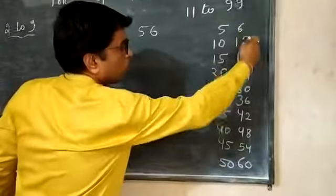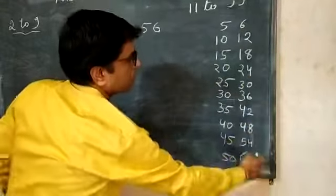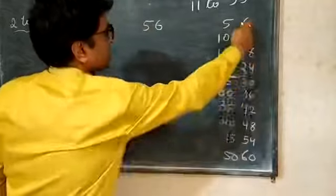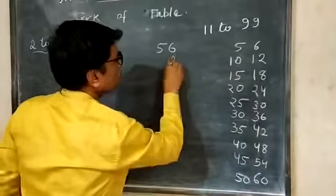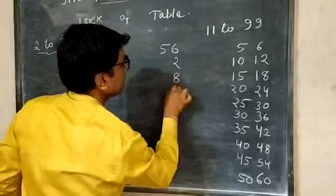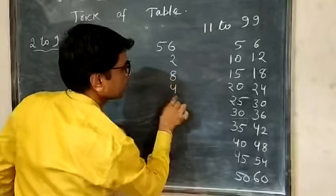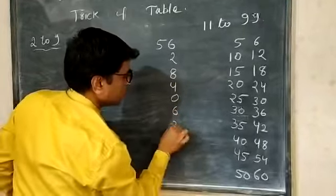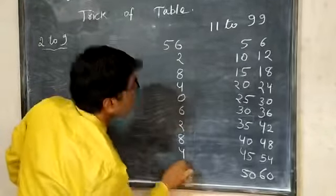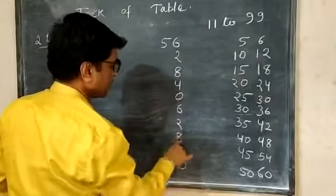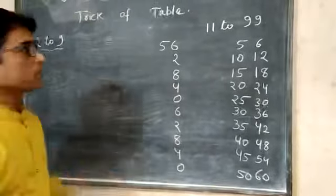So first we will take all the ones digit number. See, all the ones place. So first ones place 6, then second ones place 2, third ones place 8, then 4, then 0, then 6, then 2, then 8, then 4, and then last is 0. That's 1, 2, 3, 4, 5, 6, 7, 8, 9, 10. Understood this much?